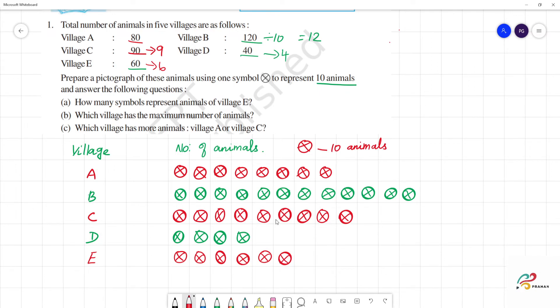This is the pictograph. Now, question is how many symbols represent animals of village E? Village E is how many symbols? 1, 2, 3, 4, 5, 6. So, totally 6 symbols. Question is 6 symbols.